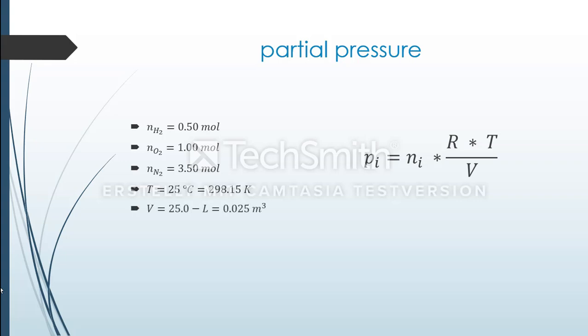The volume of the vessel is 25 liters, which is equal to 0.025 cubic meters. The gas constant is 8.314 J per mole Kelvin, which is equal to 8.314 Nm per mole Kelvin.